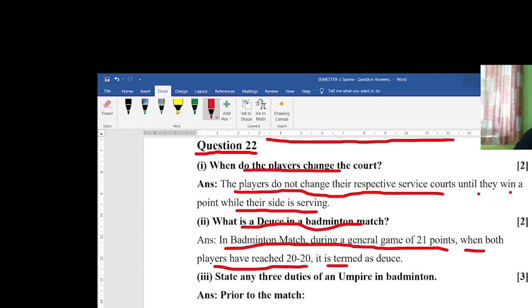The answer will be: In badminton match, during a general game of 21 points, when both players have reached 20-20 points, it is termed as deuce. Basically it happens in the individual game as well as in doubles when the teams or the players get 20 and 20 points, then it is deuce.